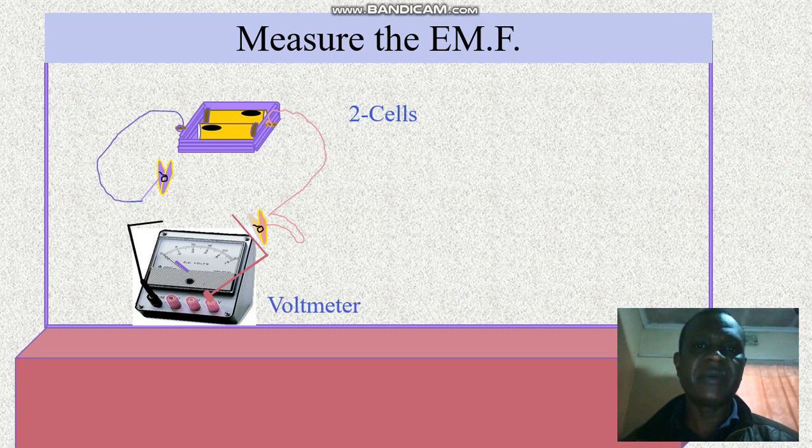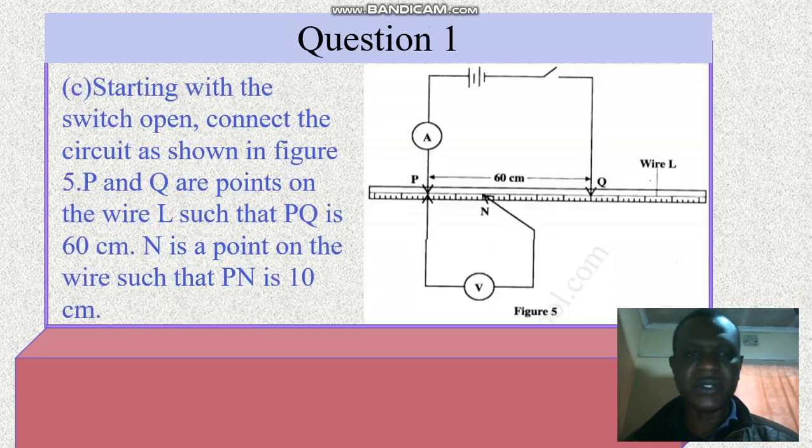Here we are. We have got the EMF being measured. Cells, a voltmeter. Connect the two clips onto the voltmeter across the terminals and we end up having the voltage as 3.0 volts.